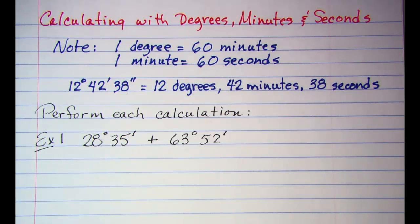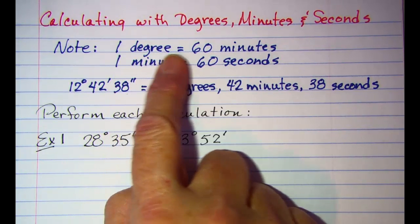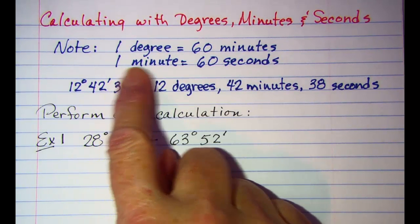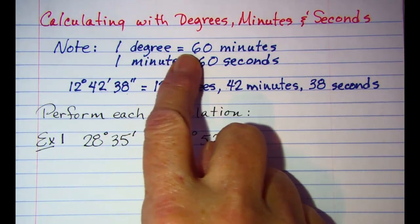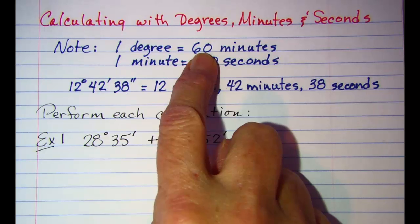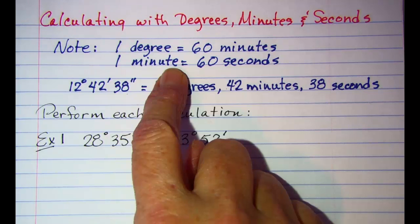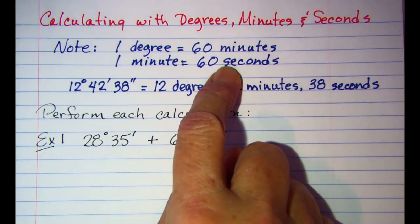In this video we will be calculating with degrees, minutes, and seconds. Before we begin, be aware that one degree is the same as 60 minutes and one minute is the same as 60 seconds. So a degree is divided up into 60 equal parts called minutes, and then each minute is divided into 60 equal parts, each part being a second.